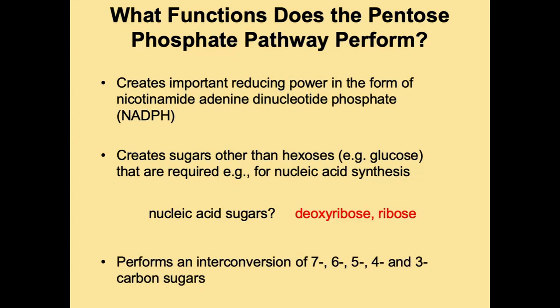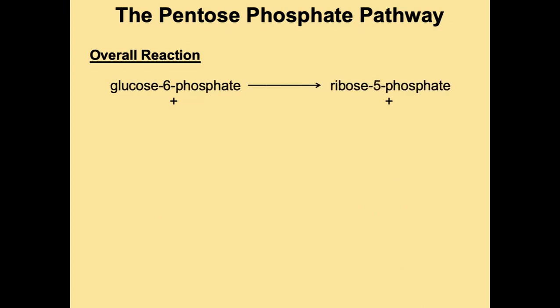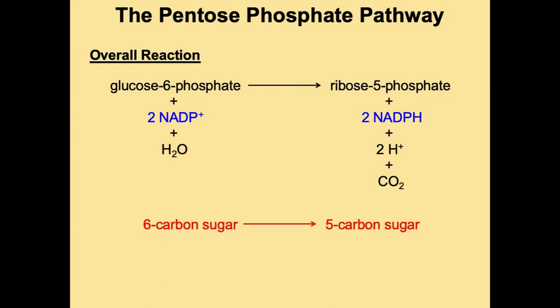Another important function of the pentose phosphate pathway is the interconversion of 7, 6, 5, 4, and 3-carbon sugars. The overall reaction starts with glucose 6-phosphate which is converted to ribose 5-phosphate. We require water and generate protons and carbon dioxide as a waste product. We convert NADP+ to two molecules of NADPH — the important reducing power required for biosynthetic pathways. So we're converting a 6-carbon sugar to a 5-carbon sugar, important for nucleic acids.